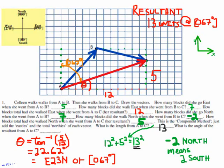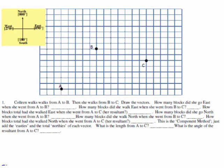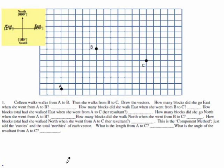Let's try one from your hand notes. When Colleen walks from A to B and then from B to C - I drew the vectors. How many blocks does she go east when she goes from A to B? Count them: one, two, three, four, five. She went five blocks east.